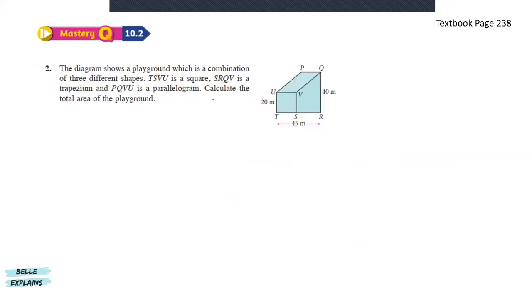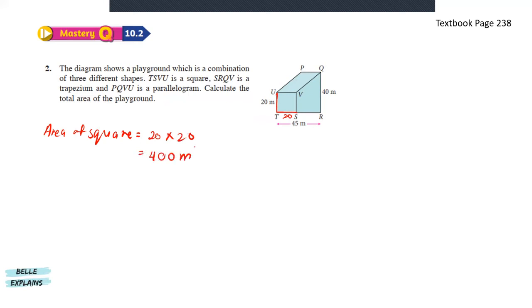Next, the diagram shows a playground which is a combination of three different shapes: TSVU is a square, SRQV is a trapezium, and PQVU is a parallelogram. Calculate the total area. First, the area of the square: since the side is 20, the area is 20 times 20, which gives us 400 meter square.